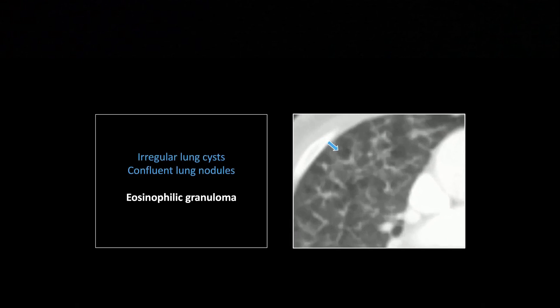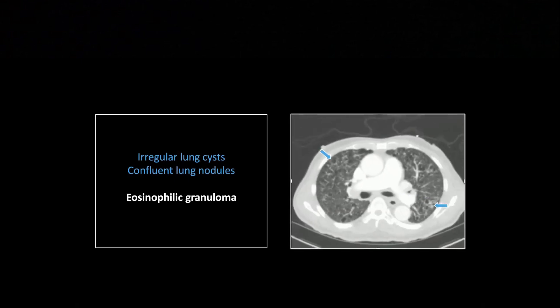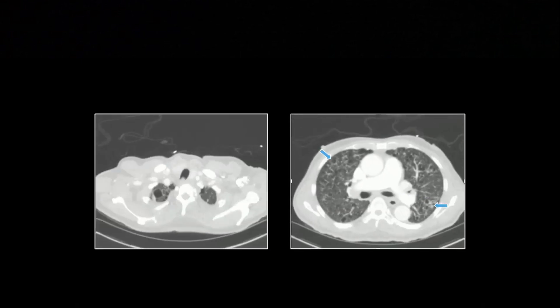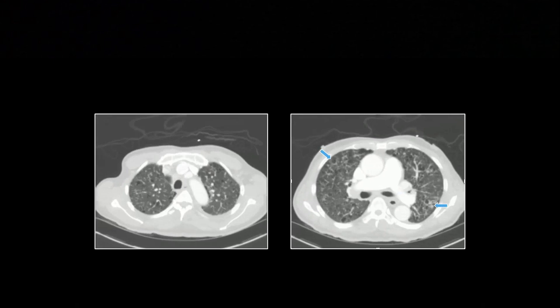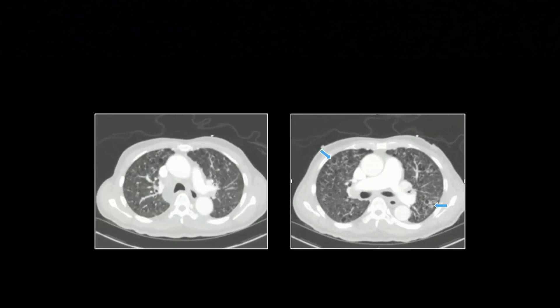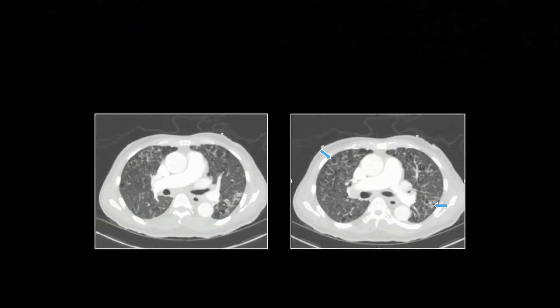This is the eosinophilic granuloma that affects the lungs. This is usually female smokers in their 40s, and this is a different thing from EG in kids. And that's different from eosinophilic pneumonia, which is the peripheral consolidation pattern.